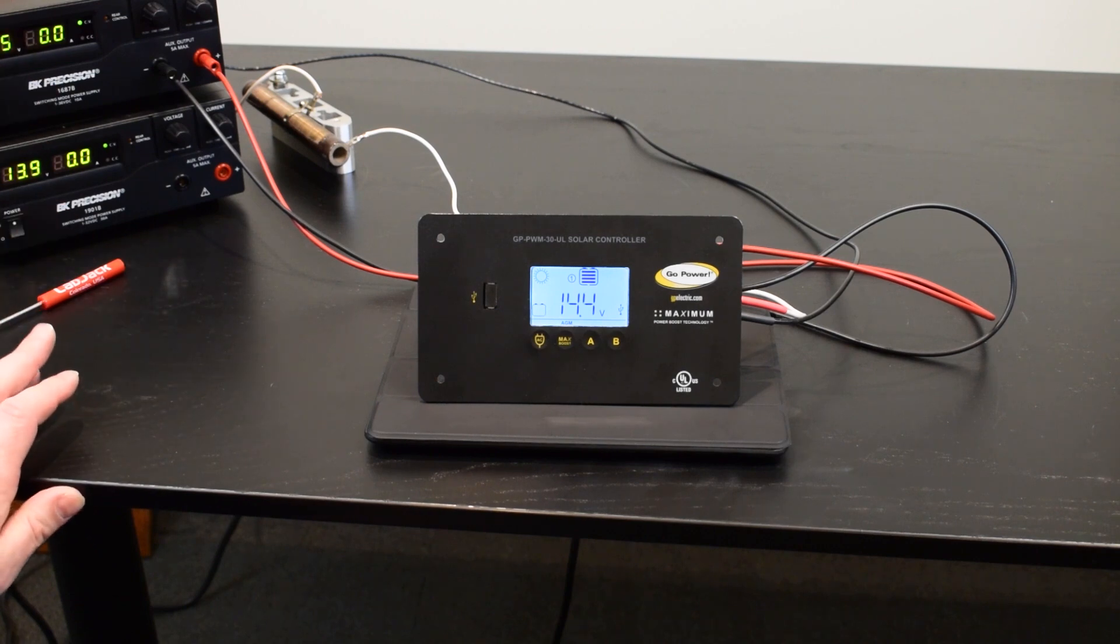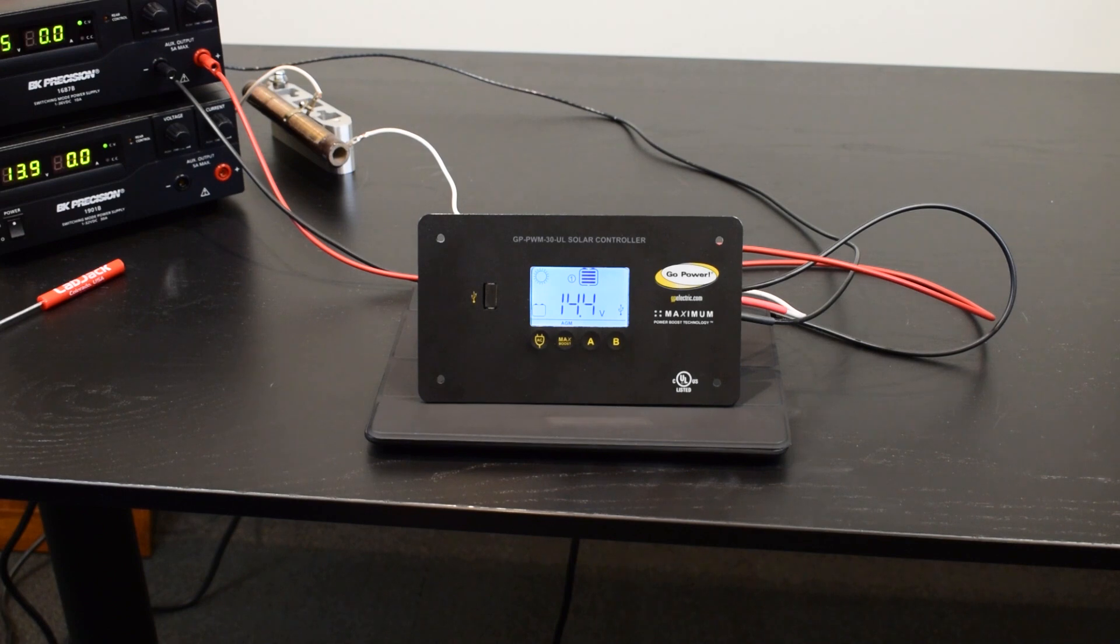The other thing that may stop the flashing is if you've got too large of a solar bank for too small of a battery bank. The one thing you can do in that situation is to cover the panels with a piece of cardboard and see if the flashing stops.